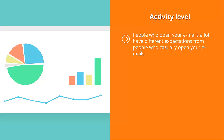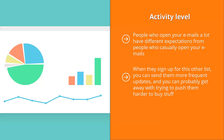Activity level. People who open your emails a lot have different expectations from people who casually open your emails. For people who are very big fans of your mailing list, you might want to ask them to sign up for another list in exchange for a reward. When they sign up for this other list, you can send them more frequent updates.